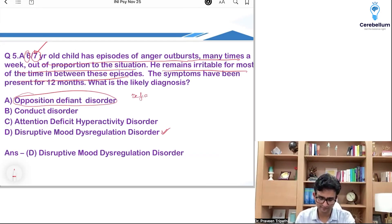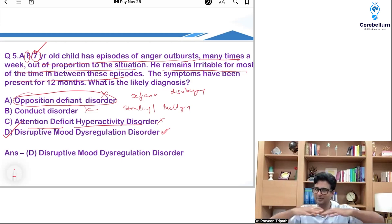We remember in opposition defiant disorder, there's history of defiance, disobeying. In conduct disorder, we remember history of things like stealing, bullying, all of that. So you rule it out, you rule it out. There is no history of inattention, no history of hyperactivity. This is the last option left. So if some of you were able to rule out the other options and got it right, great. Otherwise, remember that in DMDD, the primary symptom is irritability. The child is always irritable. And then there are some times when he will have an outburst verbally or behaviorally. So this is option D.